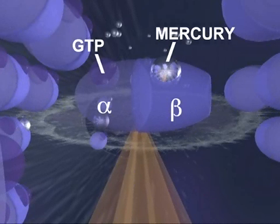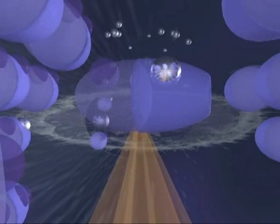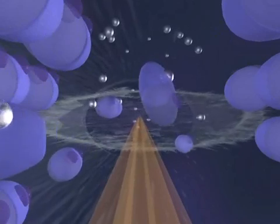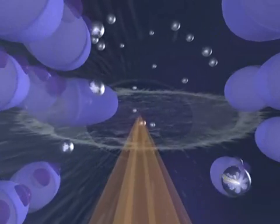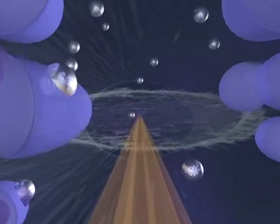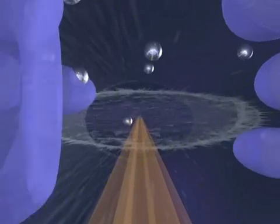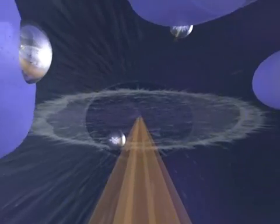Since bound GTP normally provides the energy which allows tubulin molecules to attach to one another, mercury ions bound to these sites prevent tubulin proteins from linking together. Consequently, the neurite's microtubules begin to disassemble into free tubulin molecules, leaving the neurite stripped of its supporting structure.